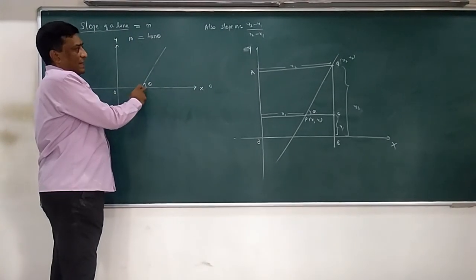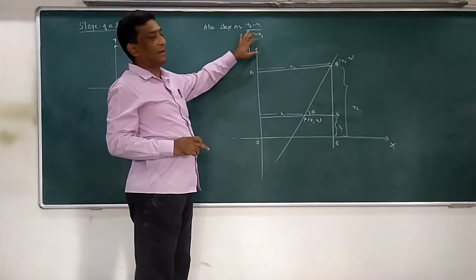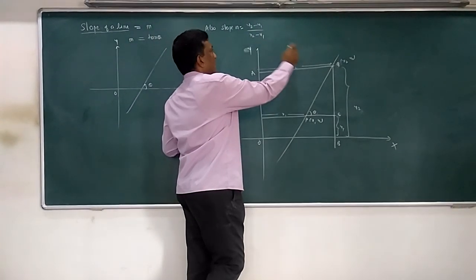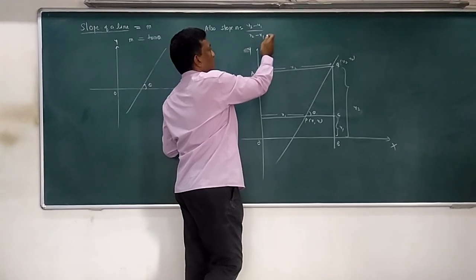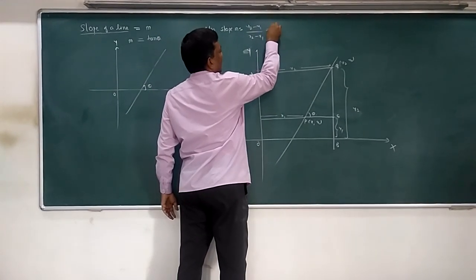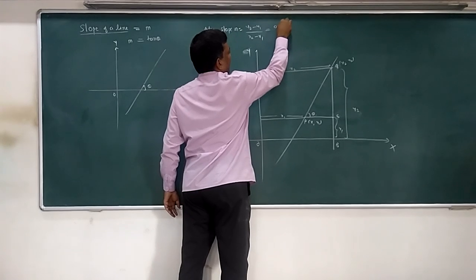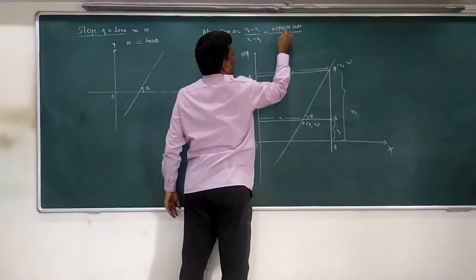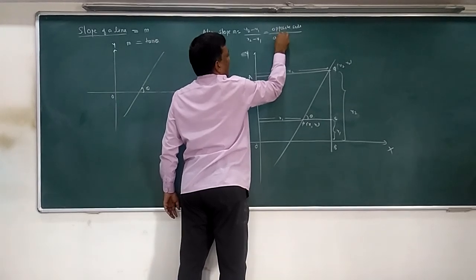Here slope is given by tan theta, here also slope is given by tan theta, but they are given in terms of coordinates like y2 minus y1 upon x2 minus x1. Basically this y2 minus y1 is nothing but the opposite side, and x2 minus x1 is nothing but the adjacent side.